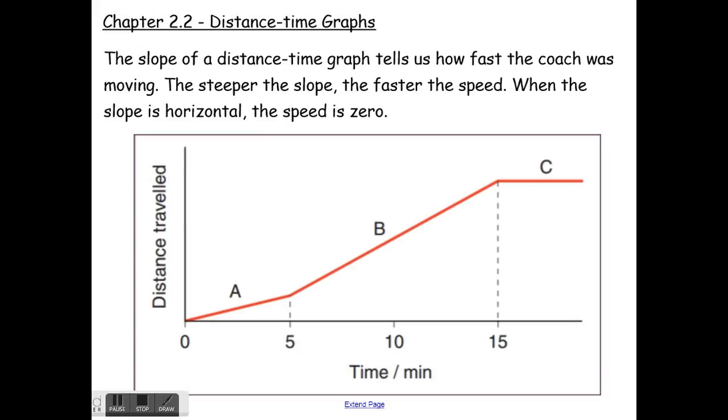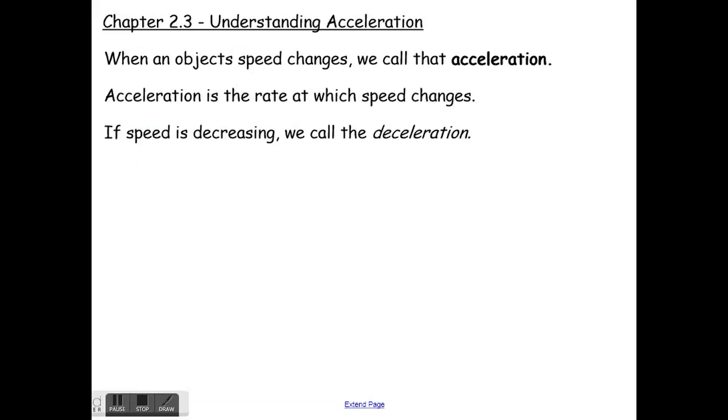That would be an example of how to draw a distance-time graph. The one I have here is the same situation but done much better. He left at a constant speed for five minutes, then he sped up so the slope is greater, it's a steeper line, then at 15 minutes he had to stop due to traffic so it's a horizontal line. The slope of a distance-time graph tells us how fast the coach is moving. The steeper the slope, the faster the speed, and when the slope is horizontal the speed is zero.